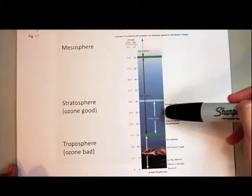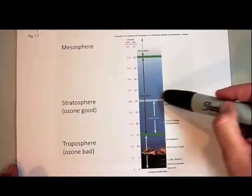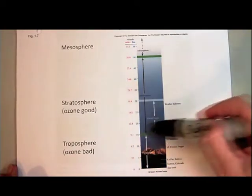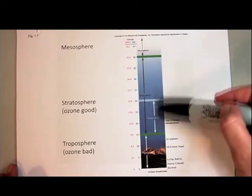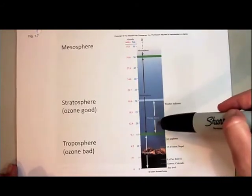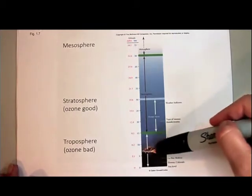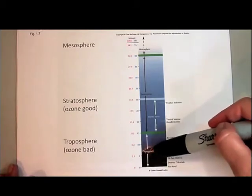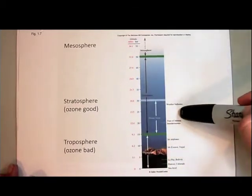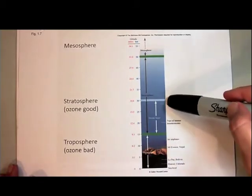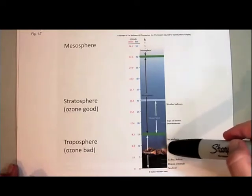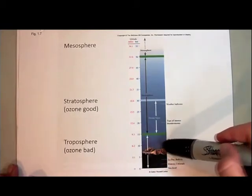The ozone layer that protects us from the sun's harmful radiation is actually a very wide swath of the stratosphere. The ozone we're talking about right now is the ozone that exists in the troposphere, right down at ground level. We'll talk about stratospheric ozone next unit. Right now we're talking about ozone created in the troposphere as part of human activities, especially the burning of fossil fuels.